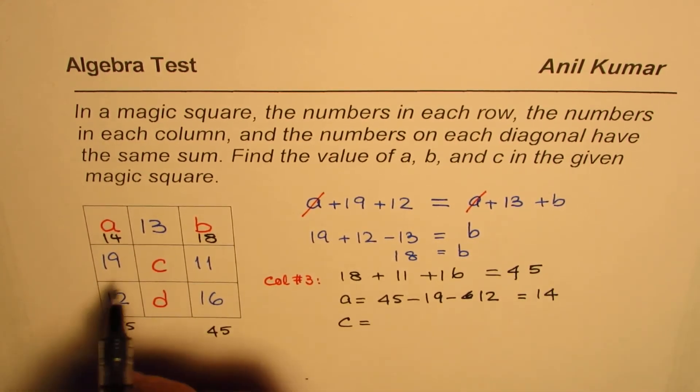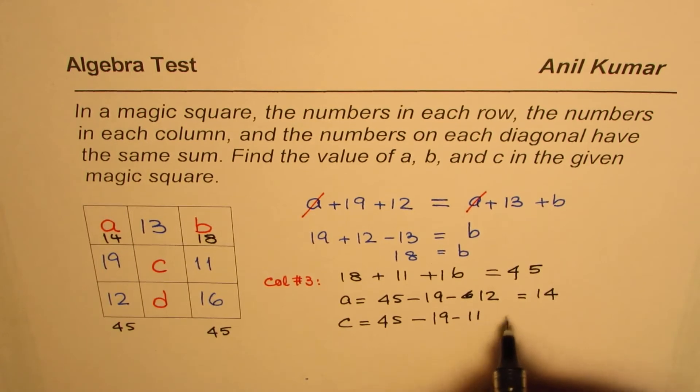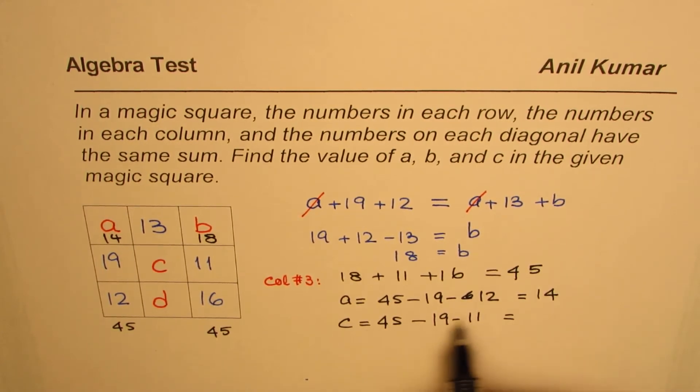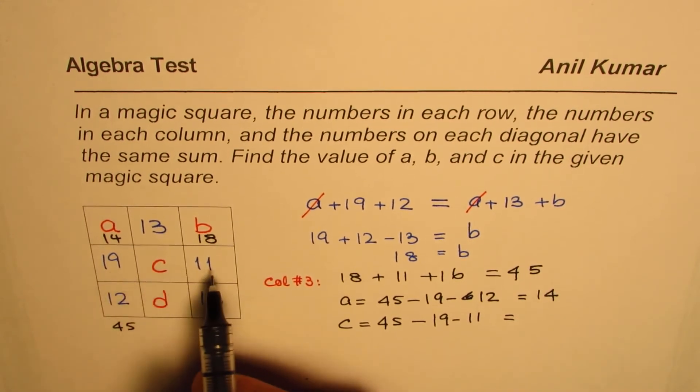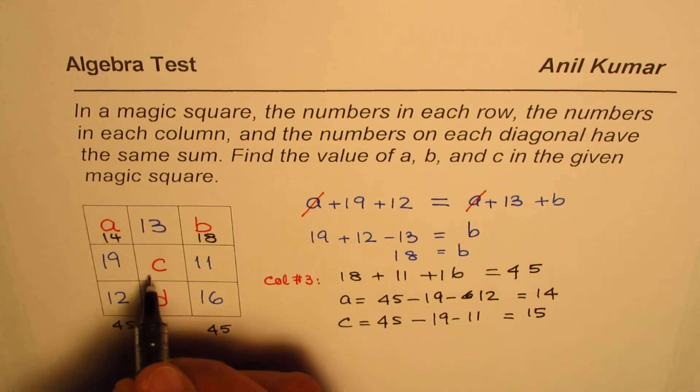C should be equal to 45, take away 11 and 19. Take away 19 and take away 11. That gives us 19 and 11 total is 30. When you take away 30, you get 15 as the value of C.